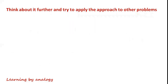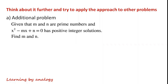Think about the thought process for the previous question further and try to apply the approach to other problems, such as this one: given that m and n are prime numbers and x squared minus mx plus n equals 0 has positive integer solutions, find m and n.